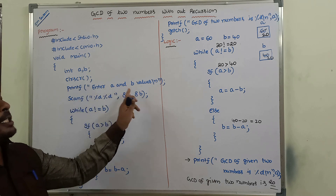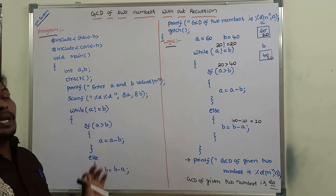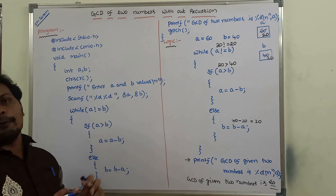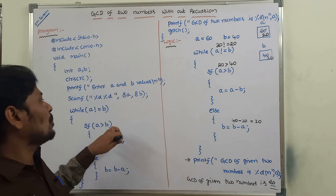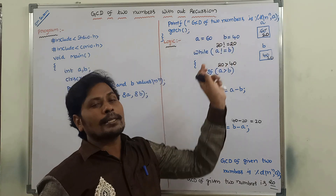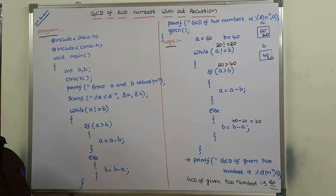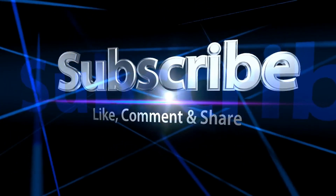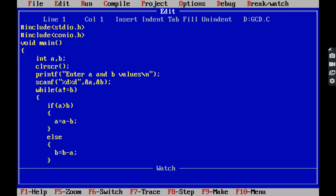In the output screen, first the statement 'enter A and B values' is printed. We enter two values: A value is 60 and B value is 40. After pressing enter, we get the output after executing this logic: GCD of two numbers is 20. This is the program. Now we can see the implementation of GCD of two numbers without using recursion. The program and logic have already been explained; now we verify whether this program gives the correct output.